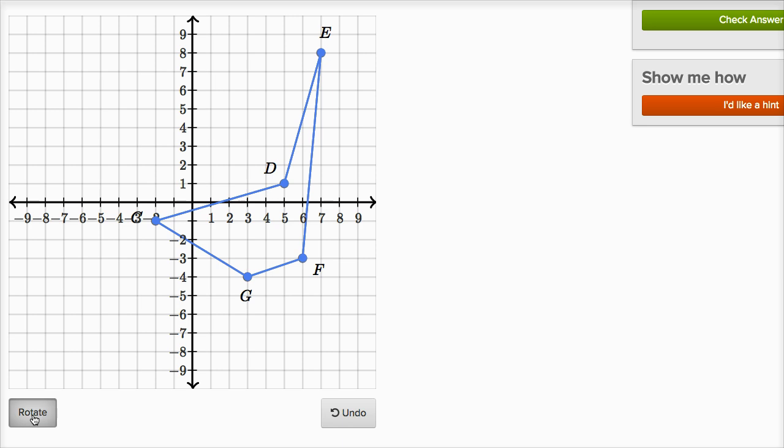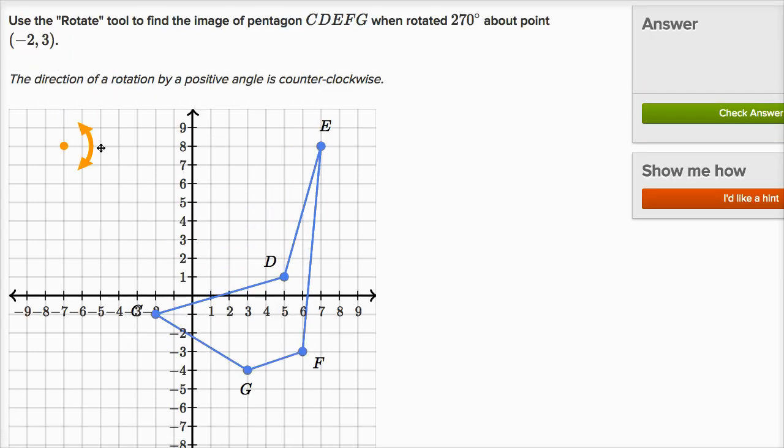So let's click on rotate, and then we want to go to the point. They say rotate around the point (-2, 3). So I move this to x equals -2, y equals 3. That's what we want to rotate around.